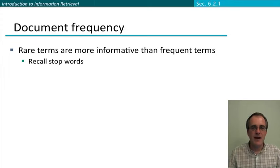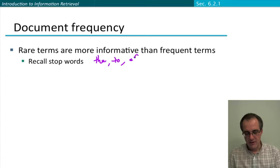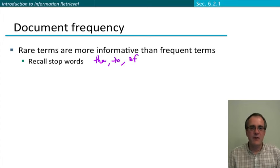The idea behind making use of document frequency is that rare terms are more informative than frequent terms. So if you remember earlier on, we talked about stop words, which was words like the, and, to, and of. The idea was that these words were so common, so semantically empty, that we didn't have to include them in our information retrieval system at all. They had no effect on how good a match a document was to a query.